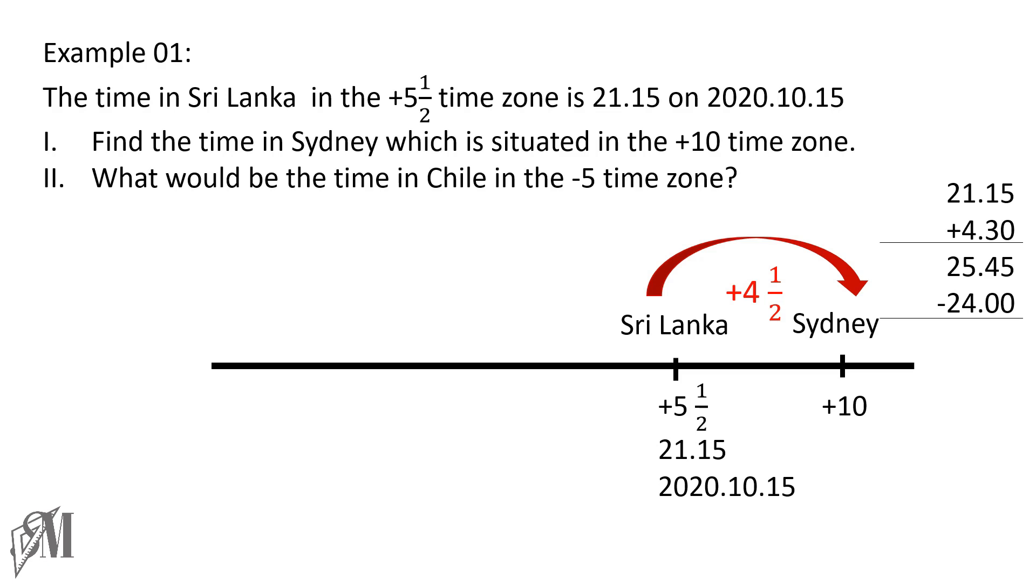Since we subtracted 24 hours, that means 24 hours has passed, a day has gone. So the date in Sydney will be 2020 October 16th.